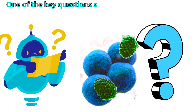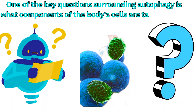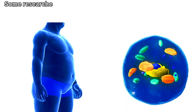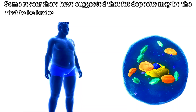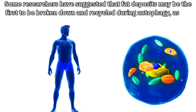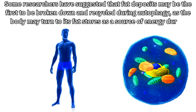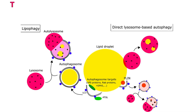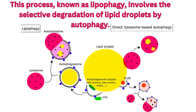One of the key questions surrounding autophagy is what components of the body's cells are targeted first during this process. Some researchers have suggested that fat deposits may be the first to be broken down and recycled during autophagy, as the body may turn to its fat stores as a source of energy during prolonged fasting or calorie restriction. This process, known as lipophagy, involves the selective degradation of lipid droplets by autophagy.